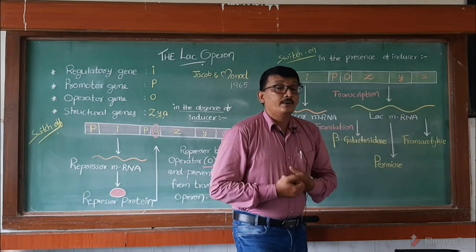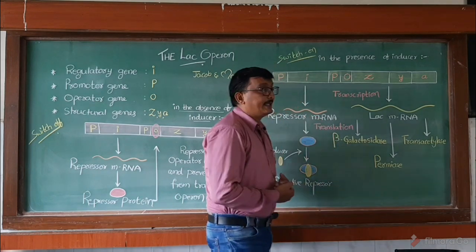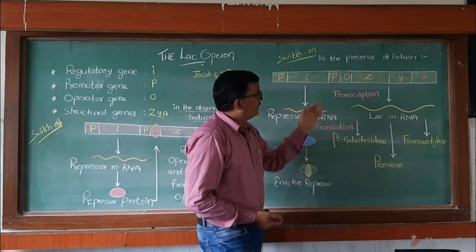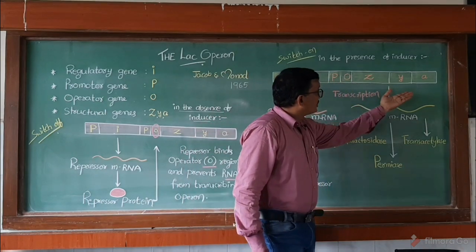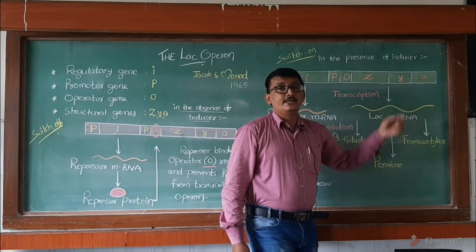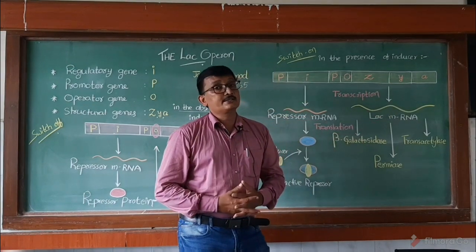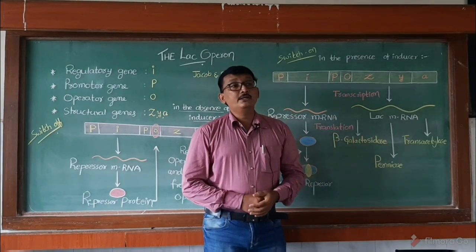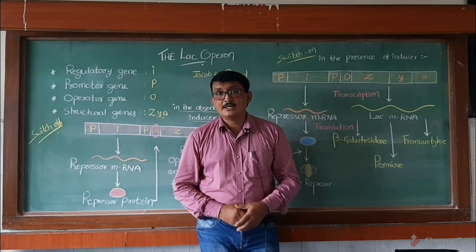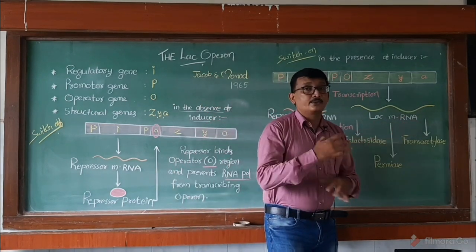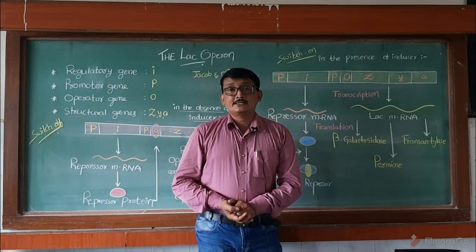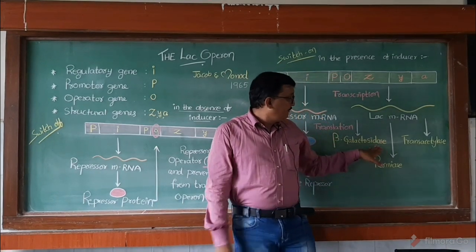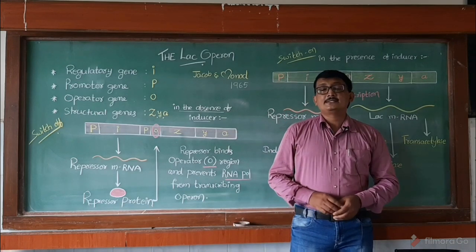When the operator region is free, RNA polymerase finds the promoter region and starts transcription of the structural genes Z, Y, and A. These ZYA structural genes undergo transcription and form lac mRNA. This lac mRNA is polycistronic mRNA, which undergoes translation and produces three types of enzymes: beta-galactosidase, permease, and transacetylase.